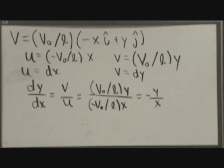If you make the equation dy over dx, v over u will simplify down to negative y over x as shown here.